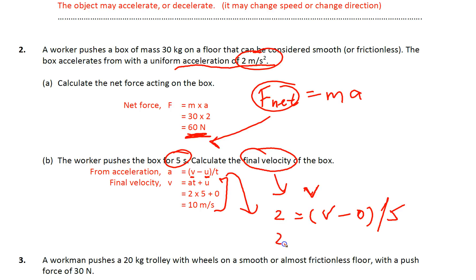So we can simplify V over 5, so in the end, V equals to 5 times 2 equals to 10 meters per second.